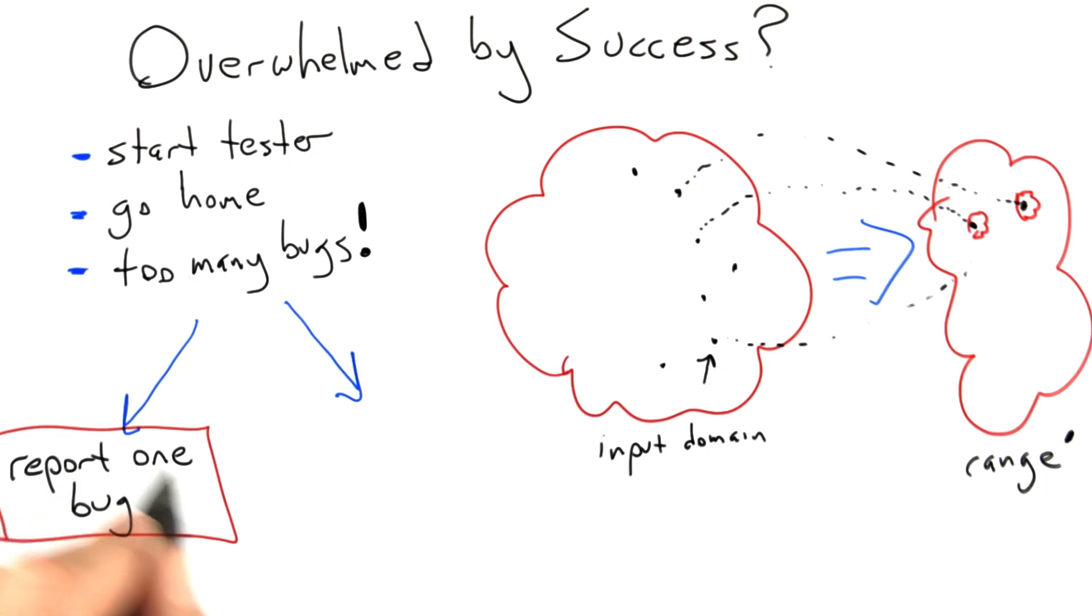And the answer, of course, is they never will because they're putting bugs in faster than we would take them out using a one bug at a time model. This can easily be the case for real software products.